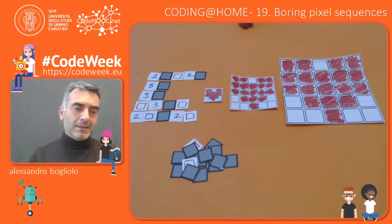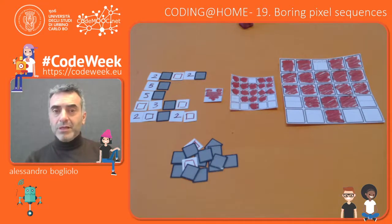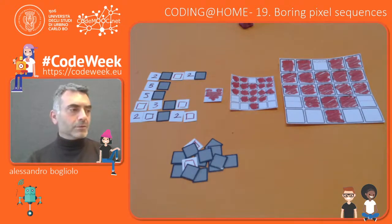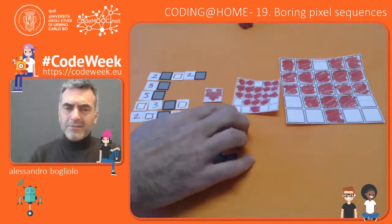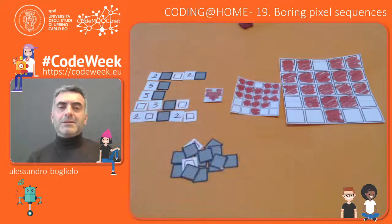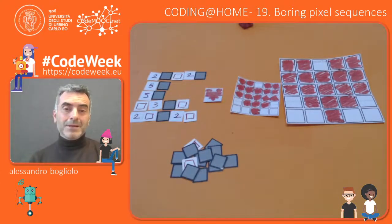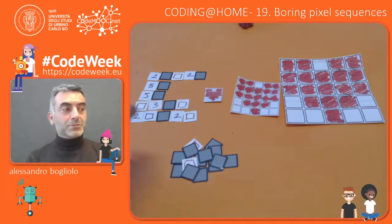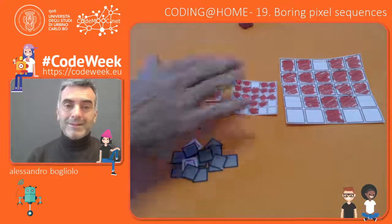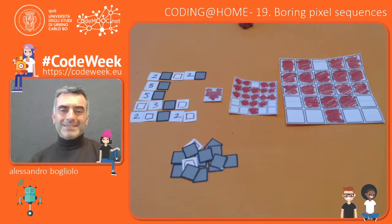In the digital images we use on our computers and smartphones, we don't have just 25 pixels, but millions of them, making the resolution of the images much better than in our example. Bye-bye!